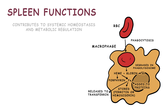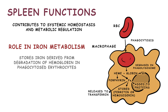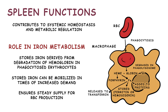The spleen also contributes to systemic homeostasis and metabolic regulation. It has a role in iron metabolism, storing iron derived from the degradation of hemoglobin in phagocytosed erythrocytes so it can be recycled. This stored iron can be mobilized during times of increased demand, such as erythropoiesis or iron deficiency, ensuring a steady supply for red blood cell production.